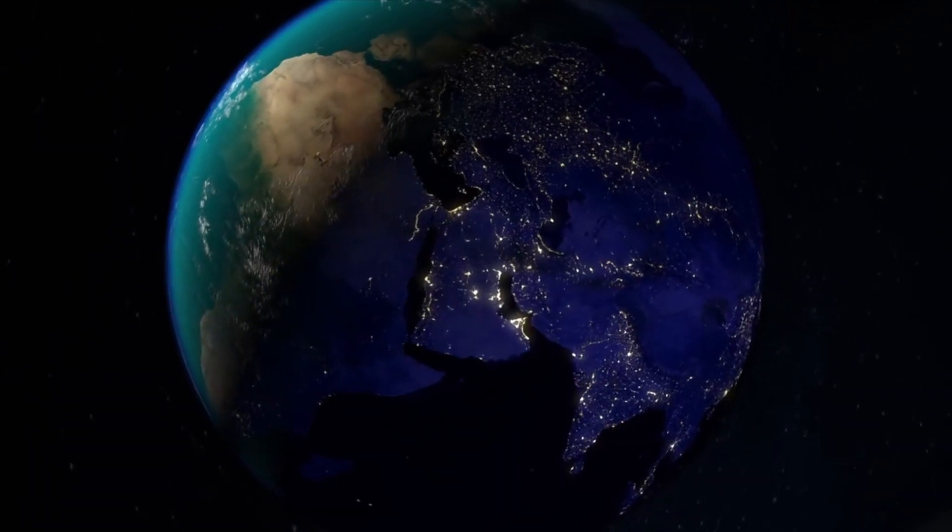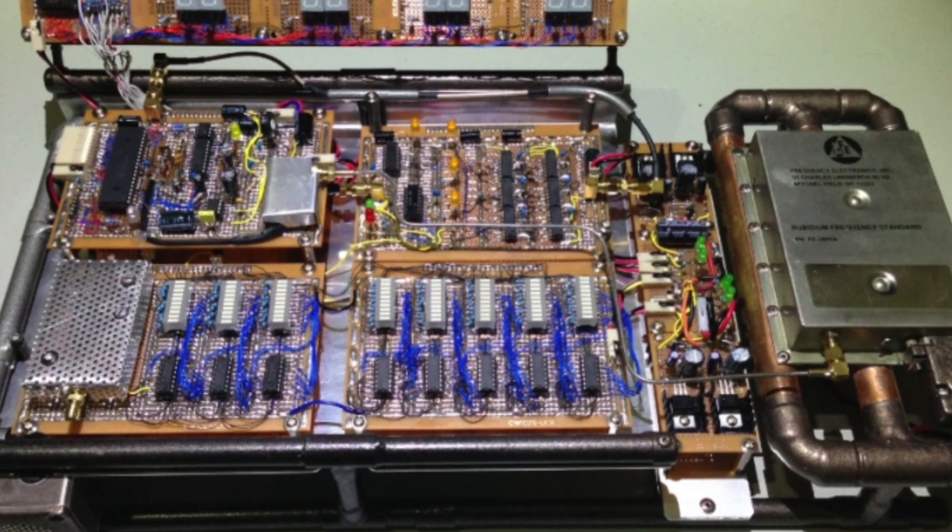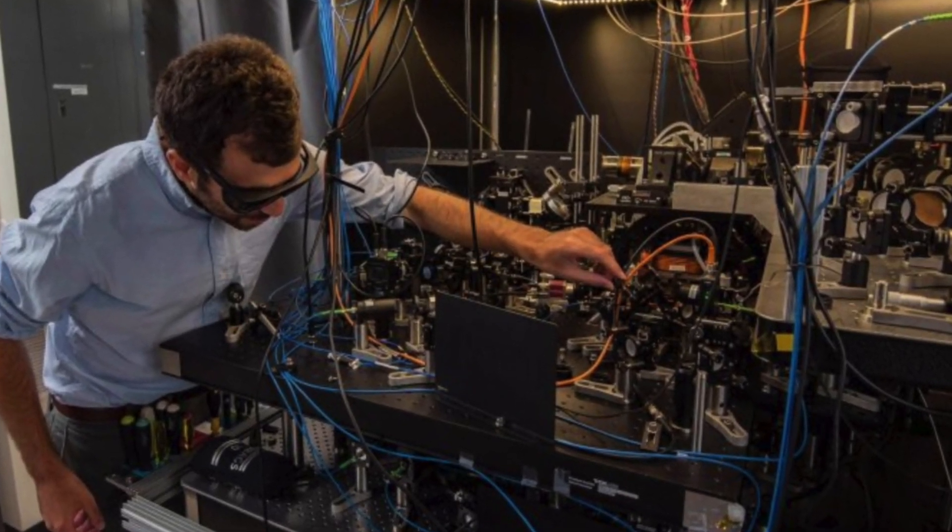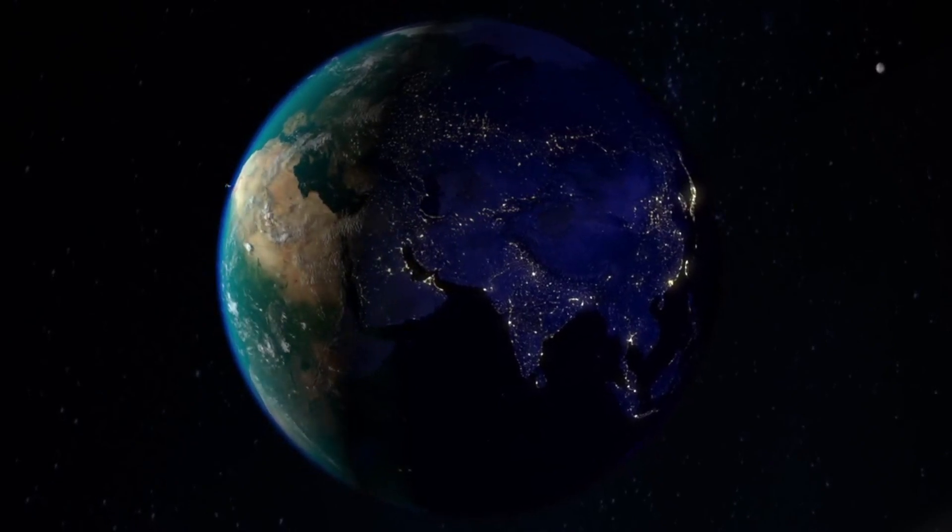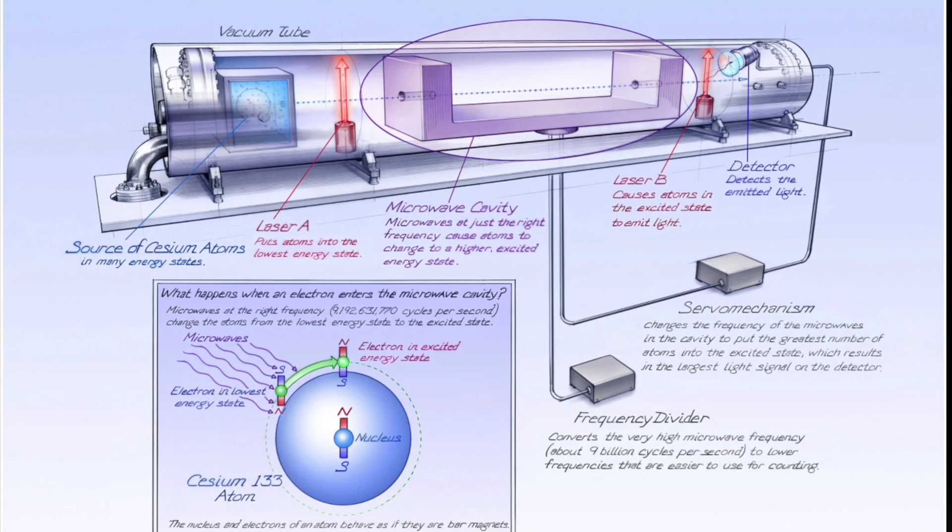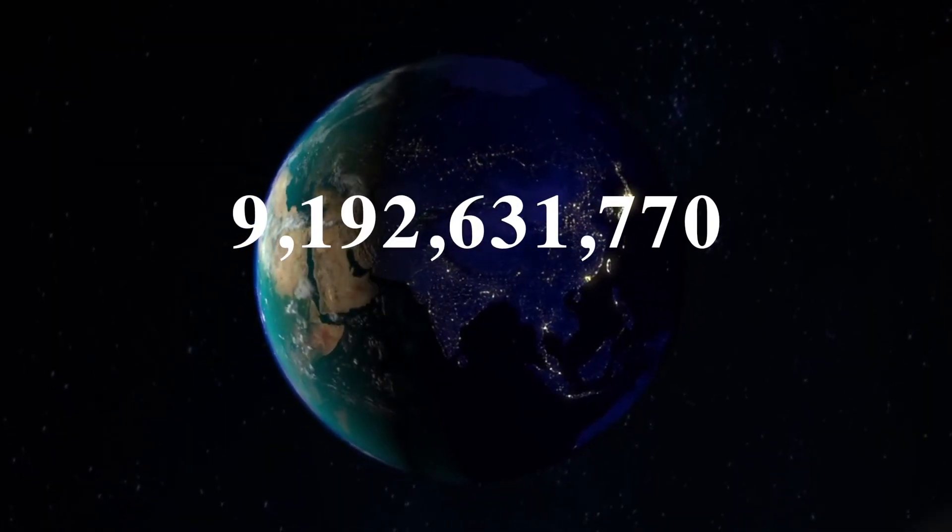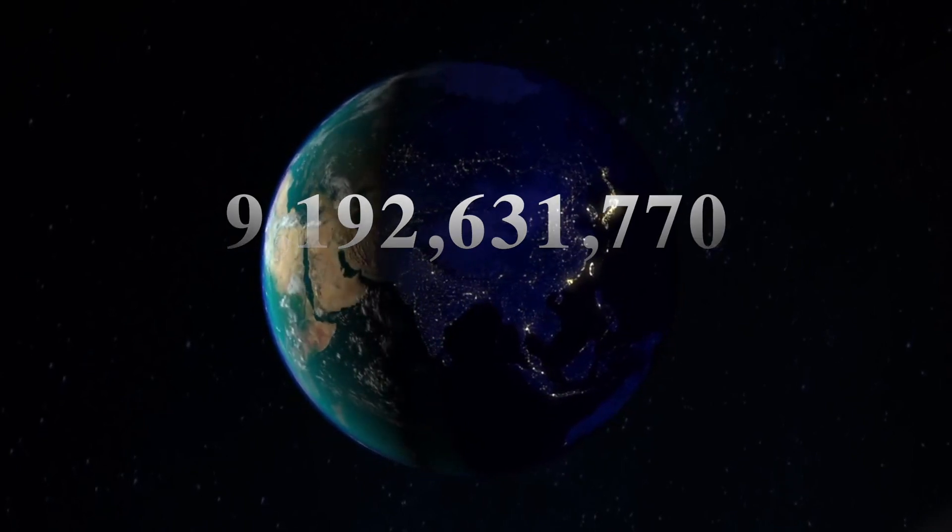A normal day on Earth has 86,400 seconds. But on an atomic clock, a second isn't defined as the 86,400th part of an Earth day, but rather as the time it takes a cesium-133 atom at the ground state to oscillate precisely 9,192,631,770 times.